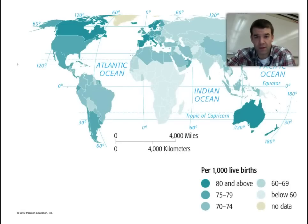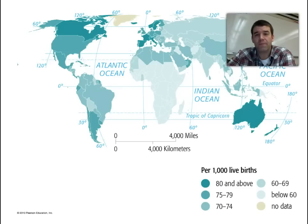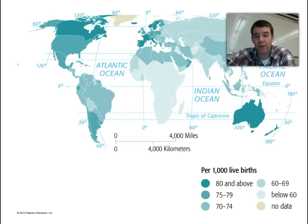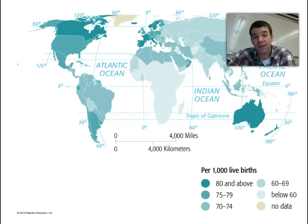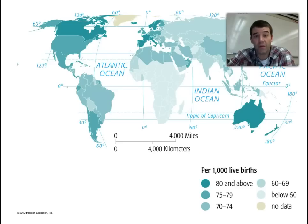Looking at the region statistically, we see some stark contrasts as we move through the world. One of the common themes is that the more developed parts of the world will be contrasted sharply with the lesser developed places in terms of life expectancy.